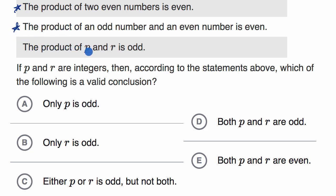The product of P and R is odd, and they say if P and R are integers, then according to the statement above, which of the following is a valid conclusion? You only need to pick one of these. So pause this video and see if you can answer that. Now let's do it together.